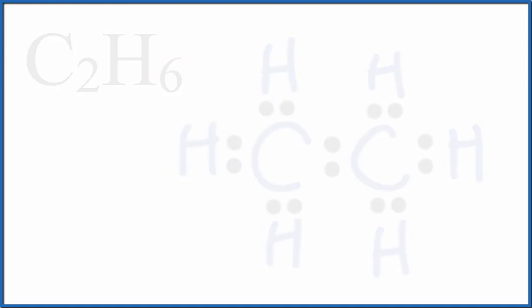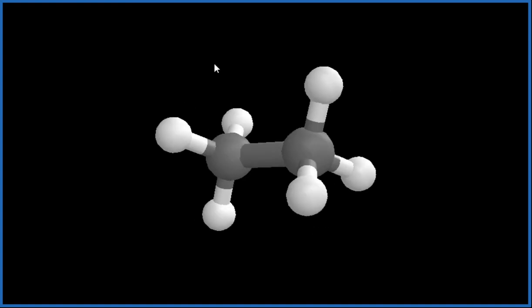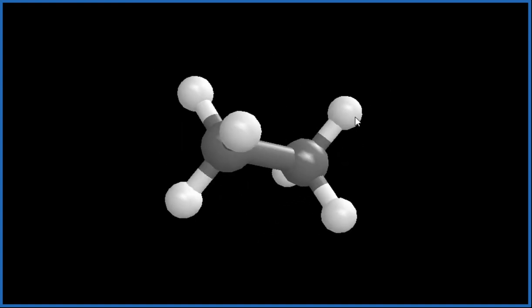That'll look something like this. So the carbons there, the dark color, the gray, and then the white, those are the hydrogens. You can see that the hydrogens are spread out pretty much as far away from each other as they possibly can be.